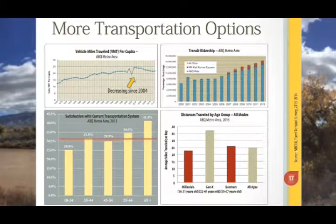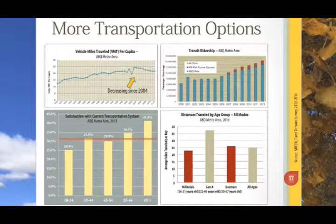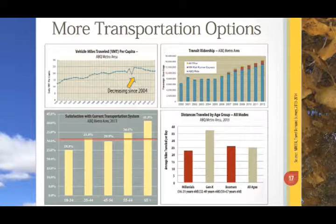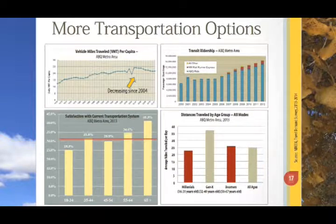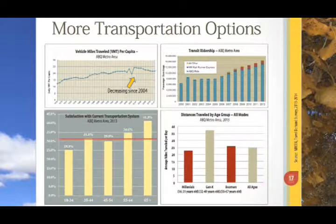A travel preference survey done by the Mid-Region Council of Governments in 2013 found that satisfaction with our current transportation choices differed depending on age group. Those 18 through 34 were the least satisfied with our transportation options. The millennial generation tends to want more choices for walking and biking as well as transit. The distance we all travel — whether as pedestrians, cyclists, transit users, or drivers — depends on your age group.